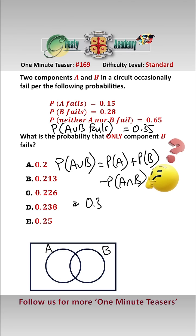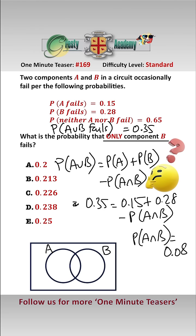Therefore 0.35 equals 0.15 add 0.28 minus P(A and B fail). So P(A and B fail) is equal to 0.08. Therefore the probability that only B fails is equal to the probability that B fails minus the probability that both fail.